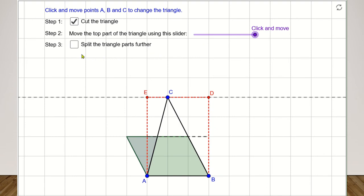Step 3. Click on the checkbox to split the triangle parts further. Step 4. Click on the circle on the green slider to move it. This makes the triangle parts slide into the rectangle.